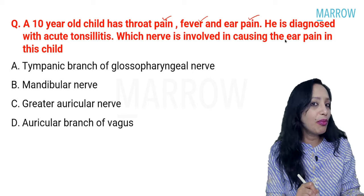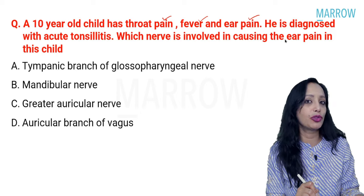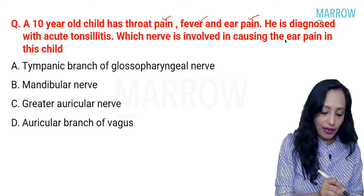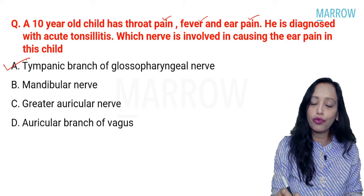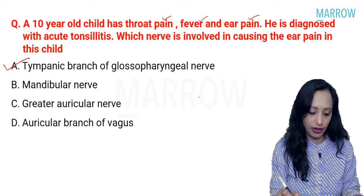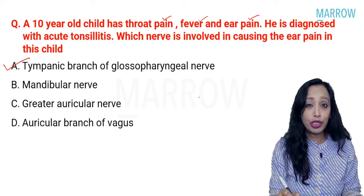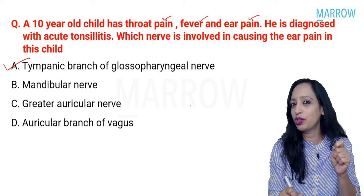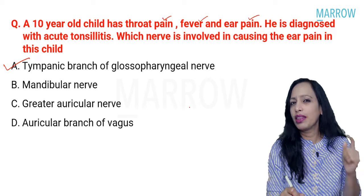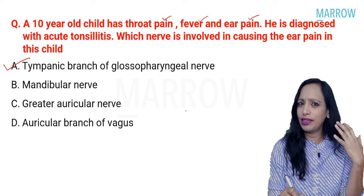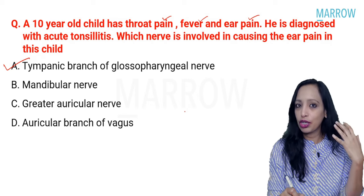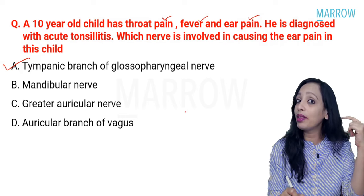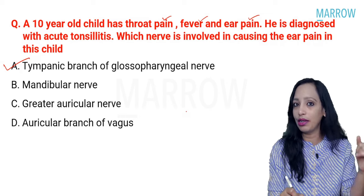That is the Jacobson's nerve. The first choice is tympanic branch of glossopharyngeal nerve. If this child has pain in the ear, exactly which part of the ear will the child be feeling the pain — in the pinna or deep inside? The glossopharyngeal supplies the middle ear, so the pain will be deep in the ear, in the middle ear area.